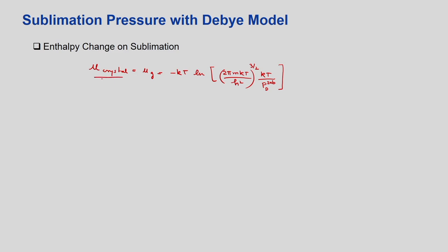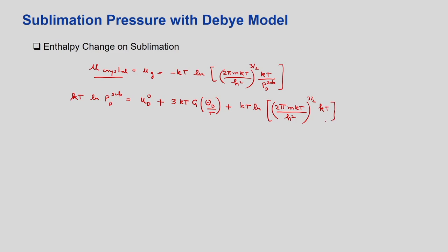Again we have to write mu crystal for the Debye model. That expression gives: kT ln(p_D,sub) = u_D0 + 3kT·g(θ_D/T) plus the last expression for ln(2π m...). Basically the expression for mu crystal is the sum of mu_D0 plus this value. When we equate it with the ideal gas mu, we take p_D,sub to the LHS and obtain an expression in terms of the ln value.